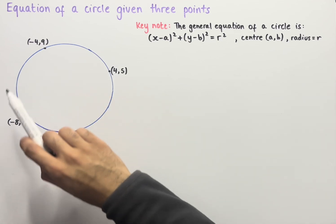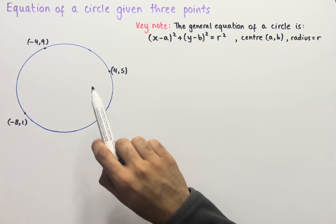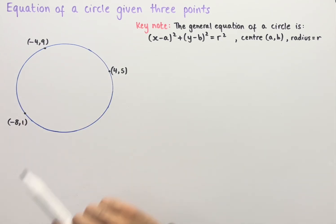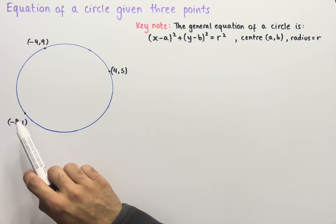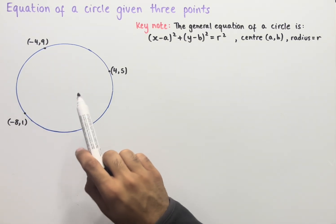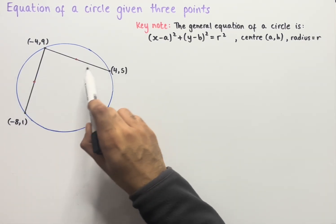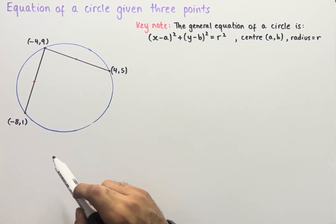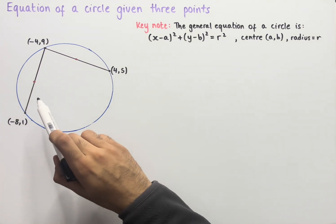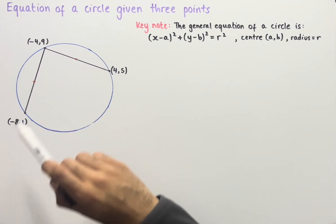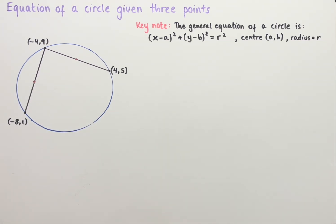We have a circle here and on the circumference of the circle we're given three points. The approach is to draw two chords on this diagram. Now that we have our two chords, we're going to work out the midpoint of each of these chords.